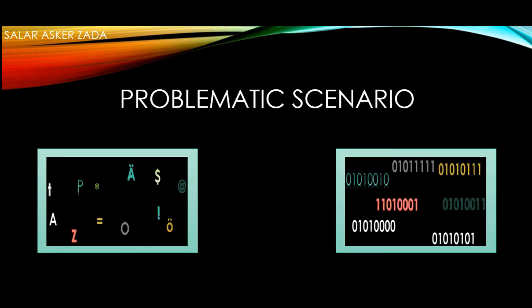Now we have a problematic scenario in front of us. On one side, we have symbols so that humans can interact with the computer. On the other side, we have zeros and ones, the only language that computers understand. If we want computers to process these symbols, then we need to convert them into zeros and ones.